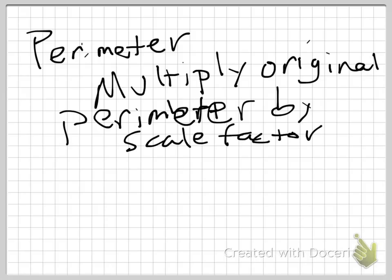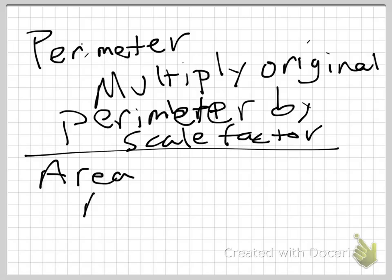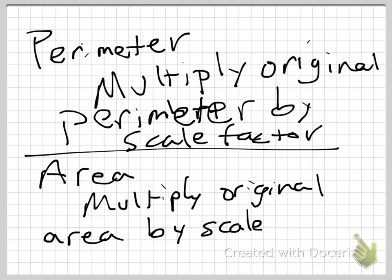And to find the area, you're going to multiply the original area by the scale factor, but we've got one extra word here, and that is the scale factor squared. And we've got to make sure we remember to square, and that's with an exponent of two. Make sure you remember that scale factor squared for our area. And that's it. If you can remember those two things, you can find your area and perimeter of similar shapes very quickly just by using the scale factor given.